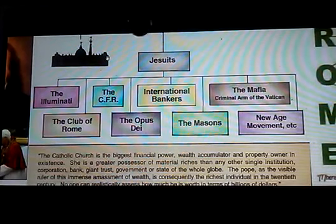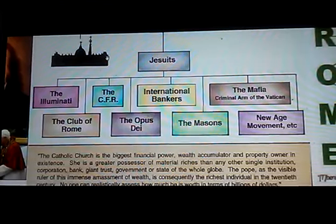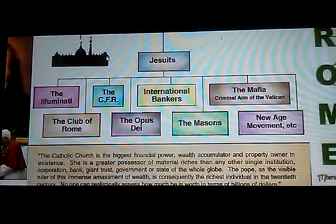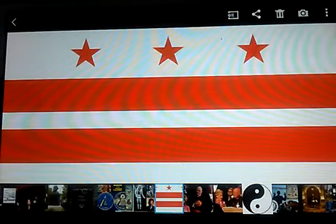This chart shows the power structure and the organizations actually running things. The world power structure is run by royal bloodlines, the financial institutions of London, and then the Vatican and Rome. This is the flag of Washington D.C., and you can see three stars. These represent the Roman Empire — one star represents the Vatican and Rome, another represents Washington D.C., and the last represents London. These are known as the three capitals of the Roman Empire.